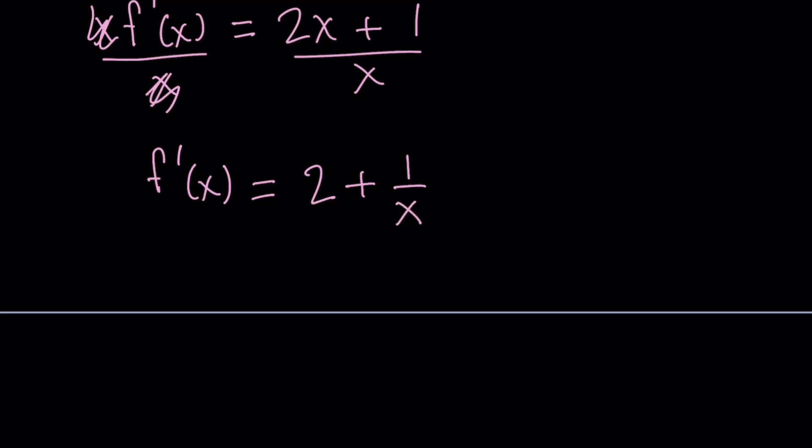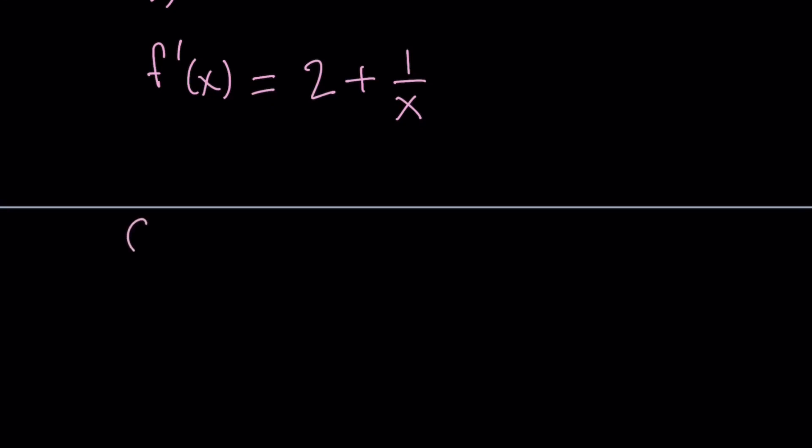So now, if we integrate both sides, we're going to find f of x from here. So if you integrate f prime of x dx, which is integrating 2 plus 1 over x dx, that is going to give you the value of f plus a constant, of course. So let's go ahead and do it.